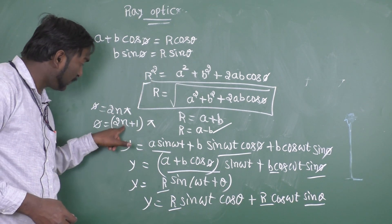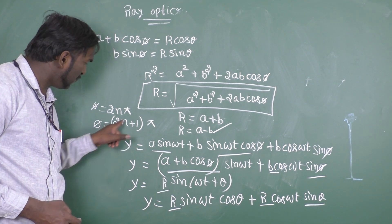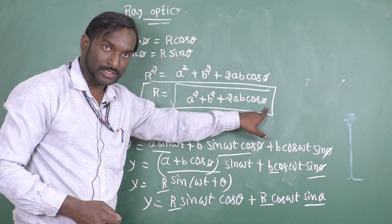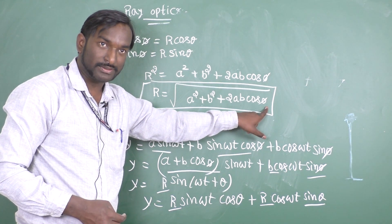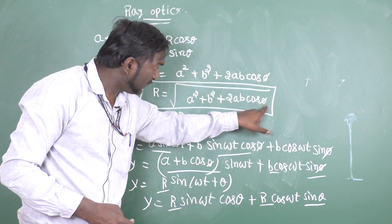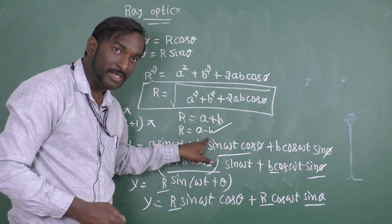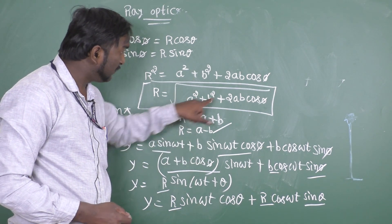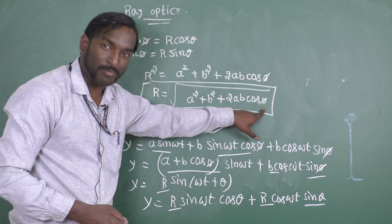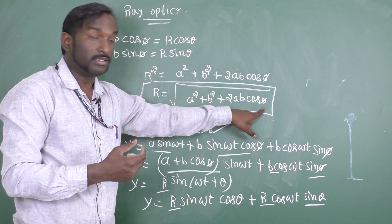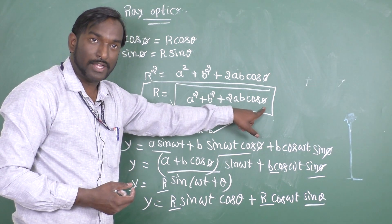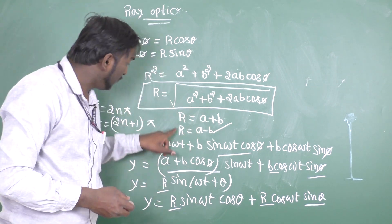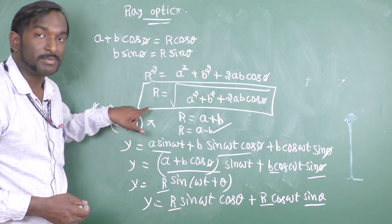So, constructive interference occurs when φ is even multiples of π — this gives a bright band. A dark band appears on the screen after superimposition of two waves when φ is odd multiples of π. Thanks.